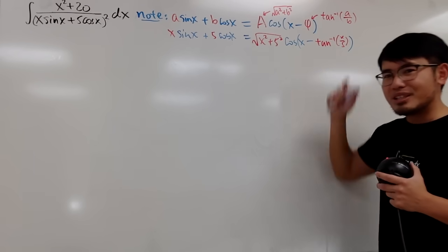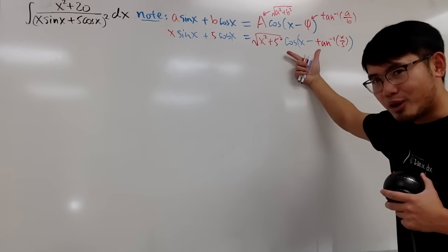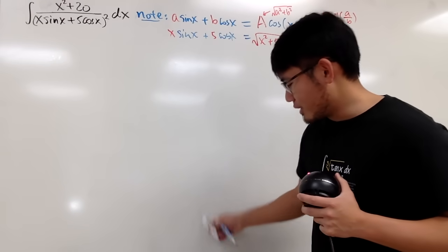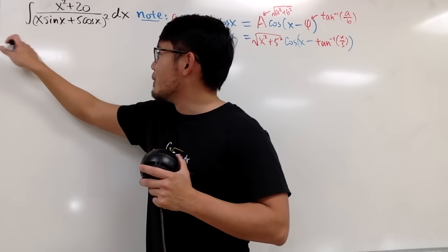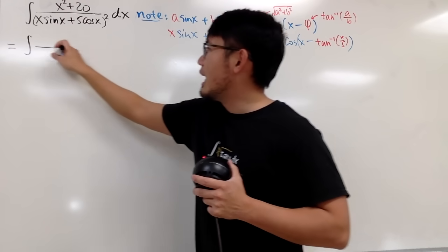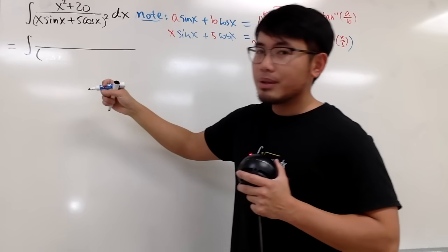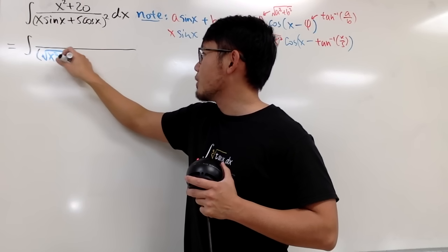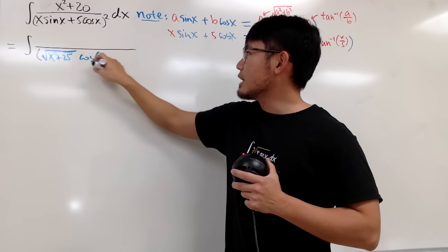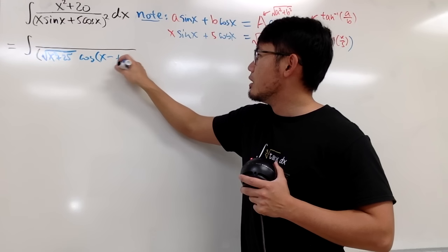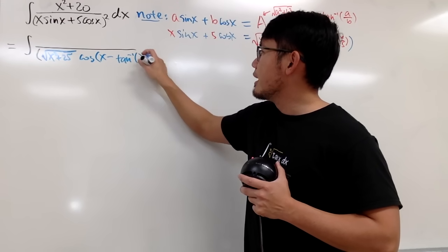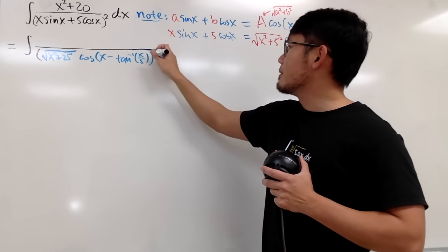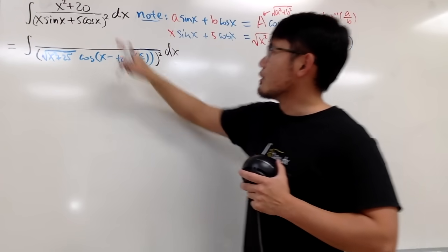Even though we have an inverse tangent, this is actually just one term, and when you put it back in the denominator good things will happen. So the integral's denominator becomes √(x² + 25) times cosine of (x minus arctan(x/5)), all squared — don't forget the square and the dx on top.